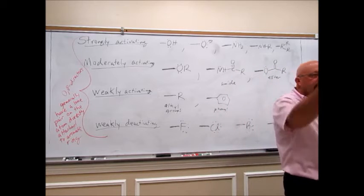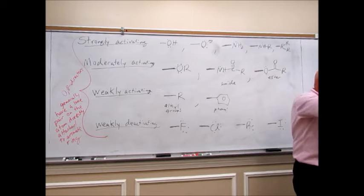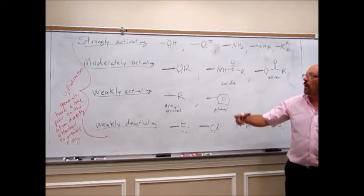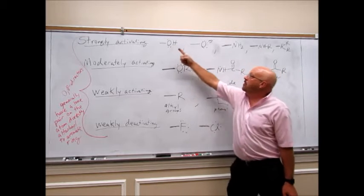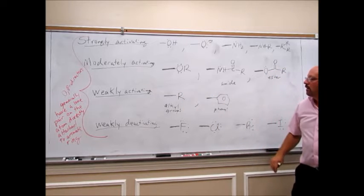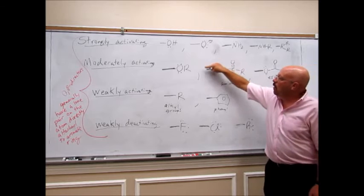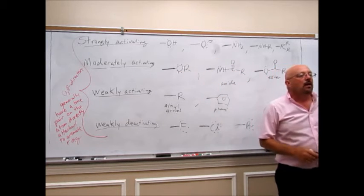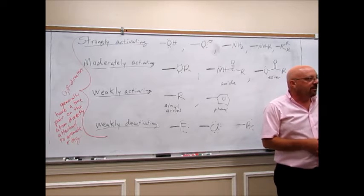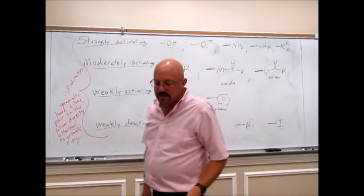That lone pair is involved in the resonance that we went through. That lone pair can resonate into the ring and put the partial negative into the ring. I went through the example with the OH, but all of those would work the same, except for alkyl and phenyl. All the rest of them have lone pairs. So that lone pair on any of these can resonate into the ring and put the partial negative, which activates the ring. It's going to send the next group into the ortho-para positions.